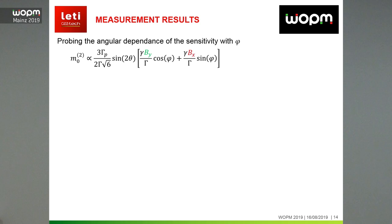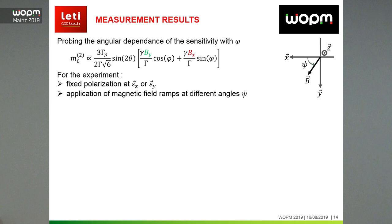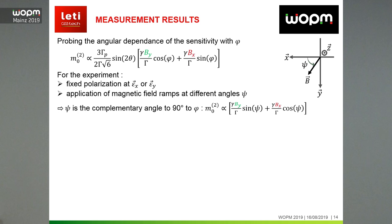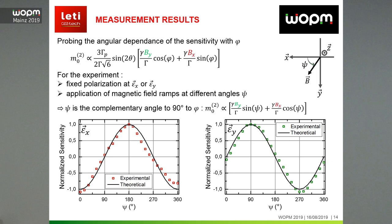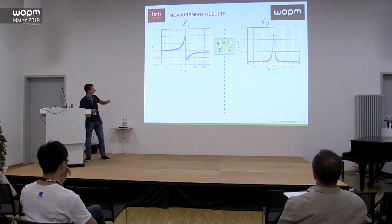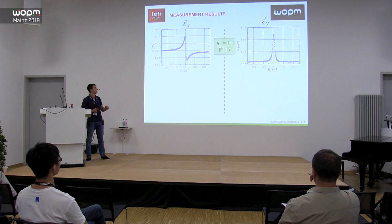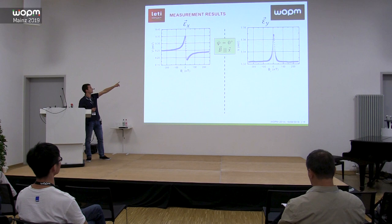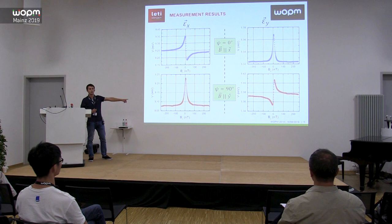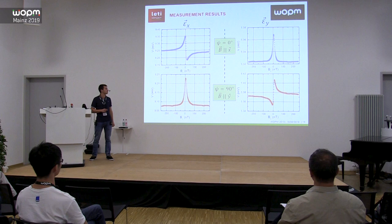The measurement we did is probing the angular dependence of sensitivity with the phi angle. For the experiment we fixed the polarization at either epsilon_x or epsilon_y — either measuring the Bx field or the By field — and performed magnetic ramps at different angles psi. Overall we recovered the theory very well, with a good dependence of the sensitivity with respect to the orientation of the magnetic field in the xoy plane. When the magnetic field is directed along the x-axis we have a purely dispersive signal shape along the epsilon_x direction and a purely resonant shape along the epsilon_y direction, and vice versa when the magnetic field is oriented along y — confirming that we really recover the theory we established.